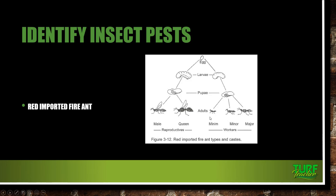As you can see in figure 3-12, we've got the male, who's a little bit smaller than the queen, and then we've got the three types of workers — the major, minor, and minimum. When we say hard workers, they're hard workers.